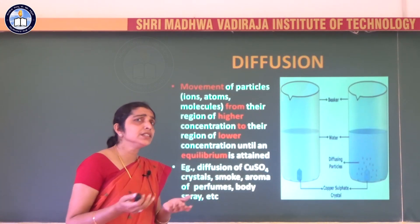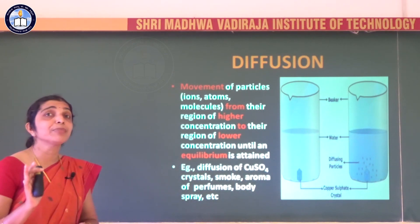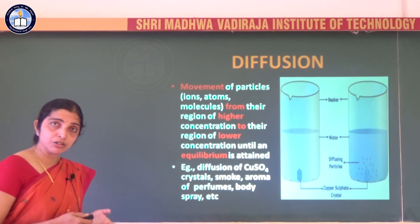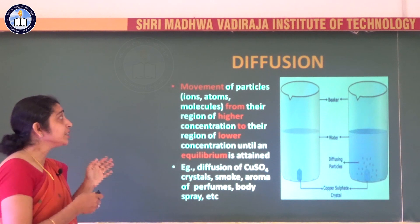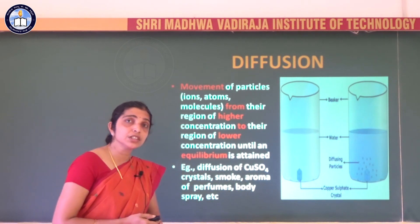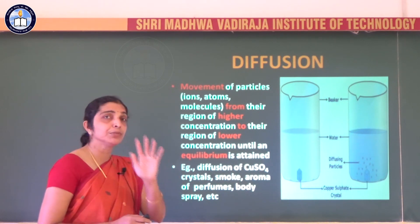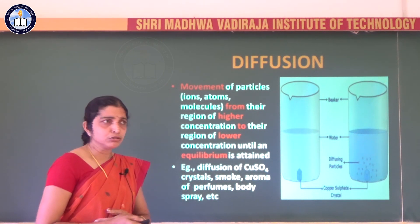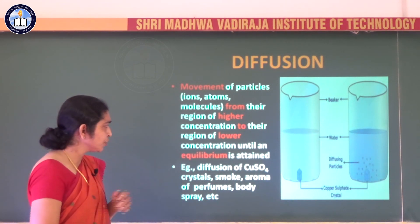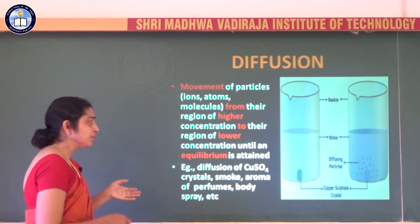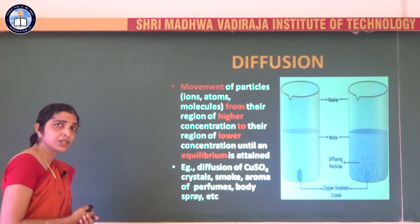What is diffusion? Diffusion is the movement of particles — it may be ions, atoms, or molecules — from their region of higher concentration to their region of lower concentration until an equilibrium is attained. There are different examples for this: the diffusion of copper sulphate crystals within liquid, smoke, and the aroma of perfumes and body sprays.